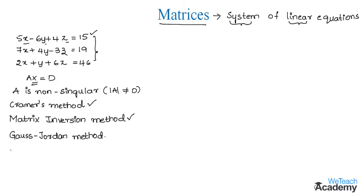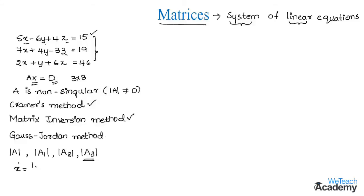First, we need to find the determinant of matrix A, then find the determinant of matrix A1, which is obtained by replacing the first column of matrix A with the constant matrix D. Similarly, we find the determinant of matrix A2 and then matrix A3. We find A3 because the coefficient matrix A is of order 3×3 — this is the main difference from solving two equations. The value of x equals the determinant of matrix A1 divided by the determinant of matrix A, also denoted as delta1 divided by delta.